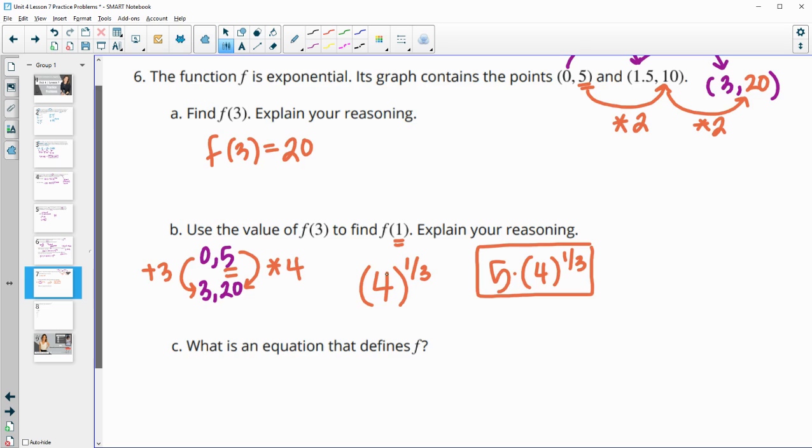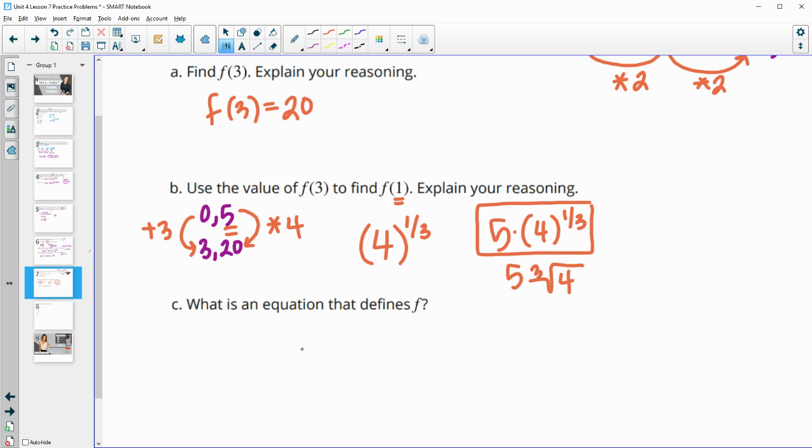You can multiply that out in your calculator or leave it like this. You can even write it as 5 times the cube root of 4, since 1/3 is the same as the cube root. If we wanted to write an equation, we would take our initial value times the growth factor, and then instead of 1/3, we would have x over 3 for our variable. This would be for every year you could plug in for x.